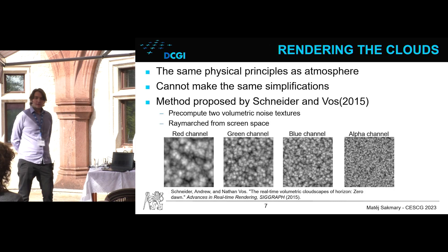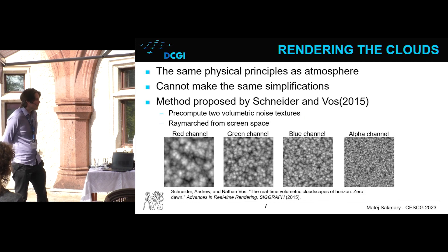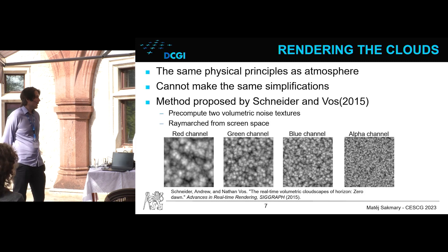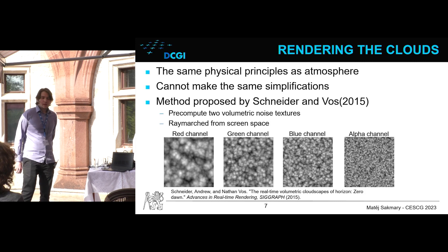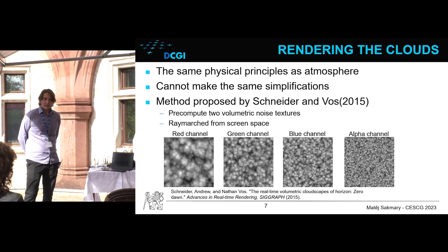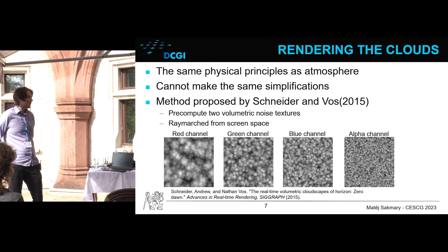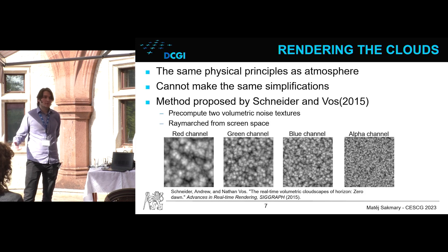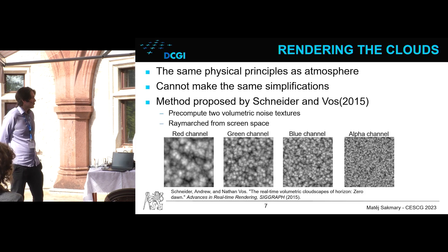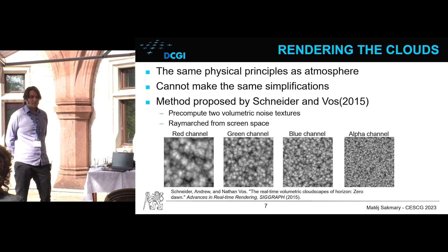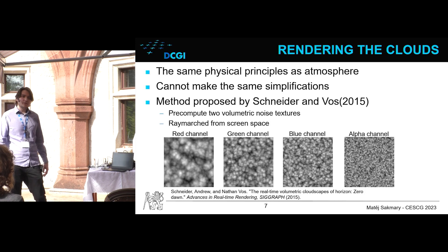To render the clouds, we leverage the same physical principles as when rendering the atmosphere, so the rendering equation stays the same. However, we cannot make the same simplifications, for two reasons. First, because the clouds are not perfectly spherically symmetrical as opposed to the atmosphere, we cannot pre-compute parts of the rendering equation into low-resolution lookup tables. Second, because the clouds are of much higher visual frequency than the atmosphere, the low-resolution rendering method is very limited.